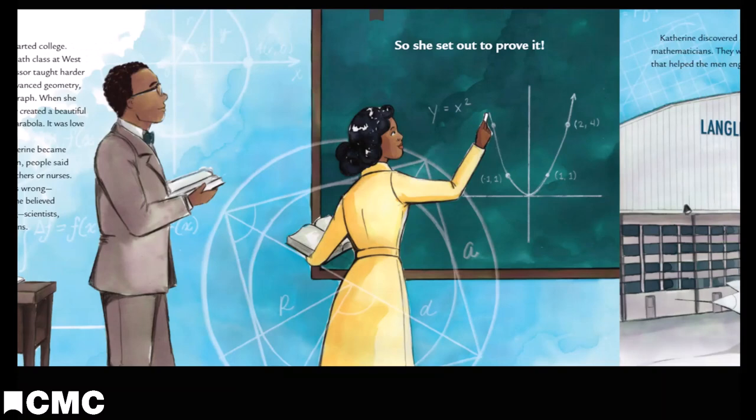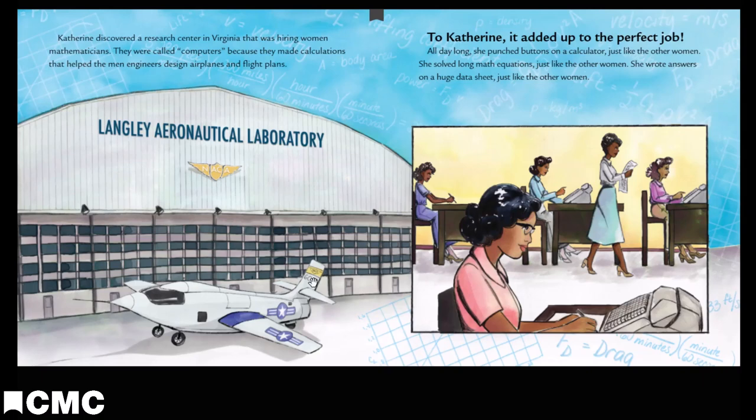Catherine discovered a research center in Virginia that was hiring women mathematicians. They were called computers because they made calculations that helped the men engineers design airplanes and flight plans. To Catherine, it added up to the perfect job. All day long, she punched buttons on a calculator, solved long math equations, and wrote answers on a huge data sheet, just like the other women.